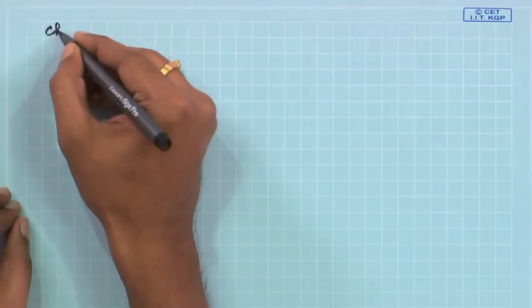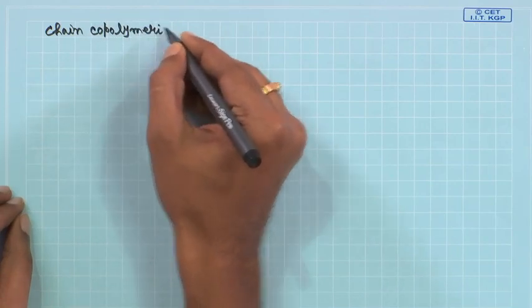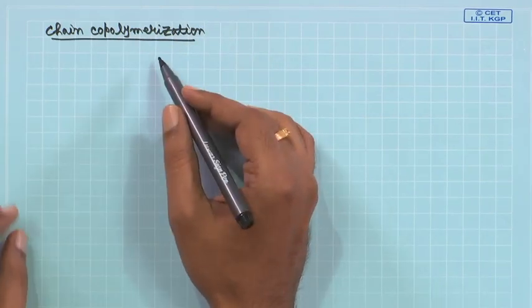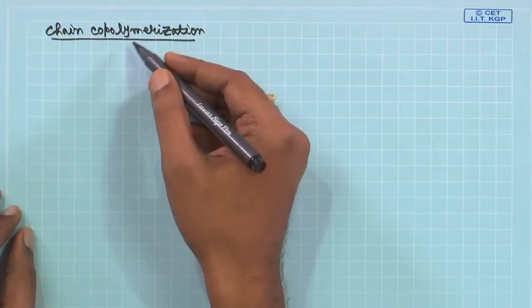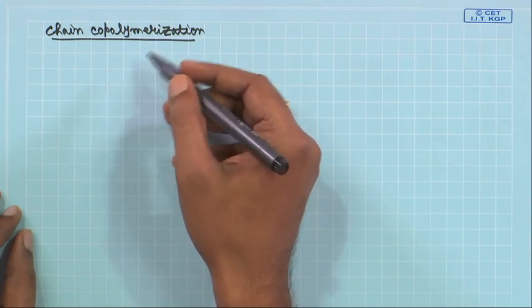Now let us have a look at what we mean by chain copolymerization. Basically this is a type of chain polymerization only. This may of course include anionic, cationic, and radical copolymerization, but in general the principles we are going to introduce will be valid for all of them. Although specifically we will mean radical, since we have not talked about anionic and cationic chain polymerization in any detail.